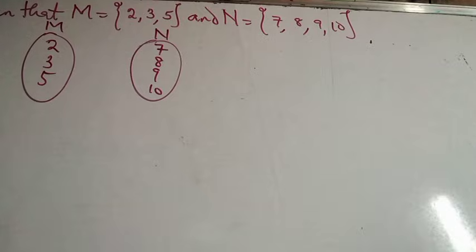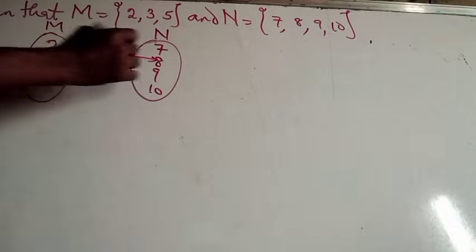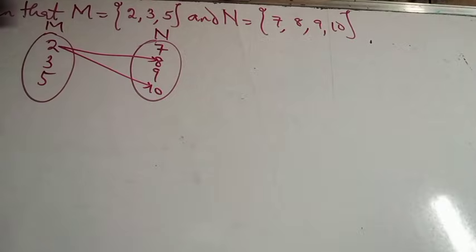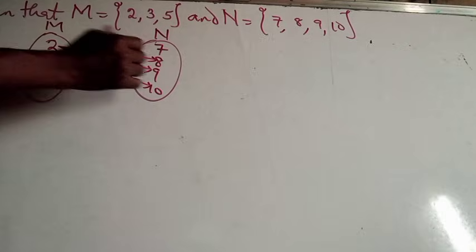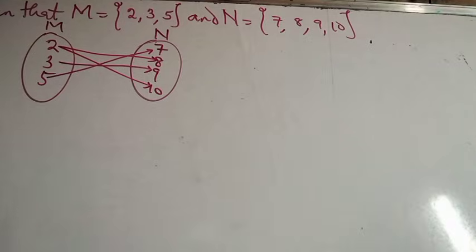Now, we want to show the relation between sets M and N using the arrow diagram form. So, let's have 2 maps 8, and let this also maps 10. Let 3 maps 9, and let 5 maps 7. You can see that we are drawing an arrow from set M to set N. So, this is a very good example of arrow diagram form showing relation between sets M and N.